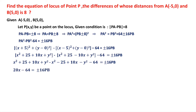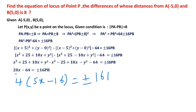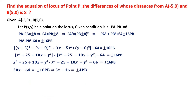Taking out a factor of 4 from the left side: 4(5x - 16) = ±16·PB. Dividing both sides by 4 gives 5x - 16 = ±4·PB. Now squaring both sides again: (5x - 16)² = (±4·PB)² = 16·PB².